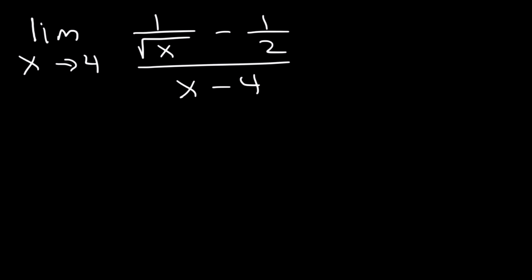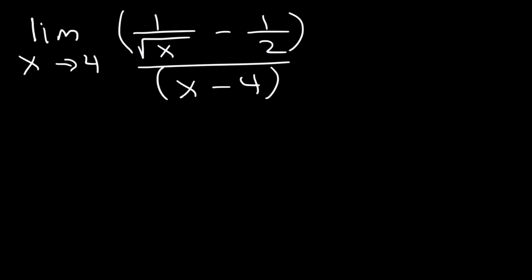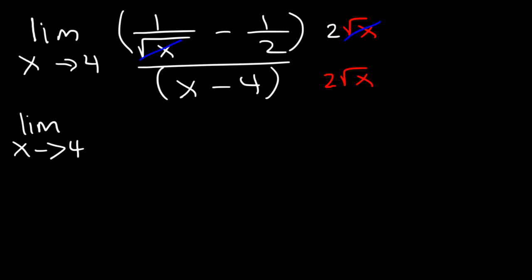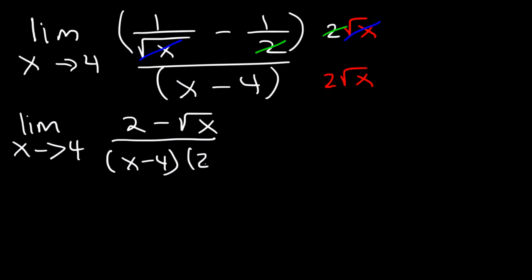You can do it in any order, but personally I like to get rid of the fractions first. So I'm going to multiply by the common denominator of these two fractions, which is root x times 2, or simply 2 root x. So if we multiply this fraction by 2 root x, we can see that root x will cancel. And so we're going to have the limit as x approaches 4 of 2 on top. And then if we multiply the fraction 1 over 2 with 2 root x, the 2s will cancel, leaving behind root x. And on the bottom, we're just going to write it as x minus 4 times 2 root x.